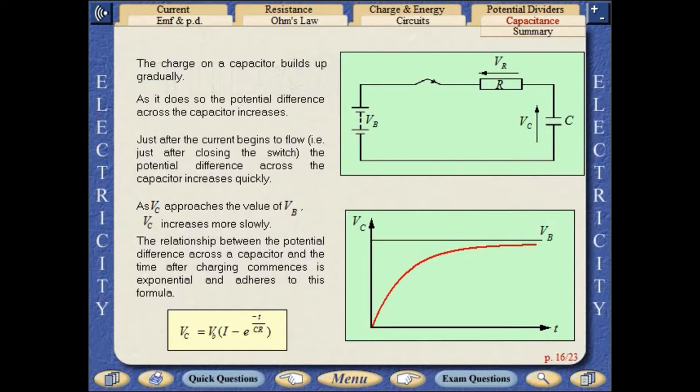As VC approaches the value of VB, it increases more slowly. The relationship between the potential difference across a capacitor and the time after charging commences is exponential and adheres to the formula shown here.